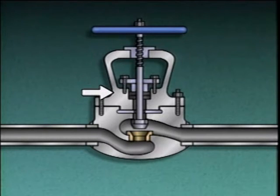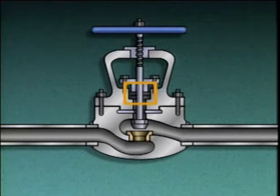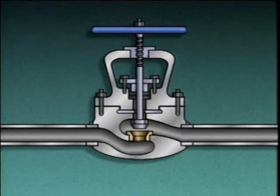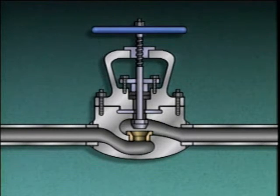The valve bonnet seals the top of the valve body. The stem extends through the bonnet and into a space called a stuffing box. The stuffing box holds the packing, which is installed around the stem. The packing is flexible and leak resistant, and it prevents leakage from the valve along the stem. The pressure applied to the packing by the packing gland is adjusted using gland nuts, so that the valve stem can be moved as the valve is repositioned but leakage does not occur around the stem.